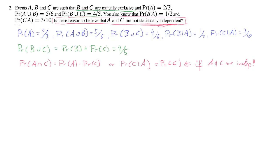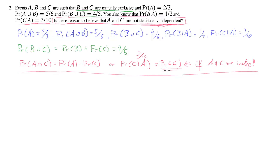The most obvious approach is to note that we are given one of these probabilities — specifically, the probability of C conditional on A, which is three-tenths. So we are going to try to find the marginal probability of C from some other source, without assuming that A and C are independent, and then check if the value we get is equal to three-tenths.